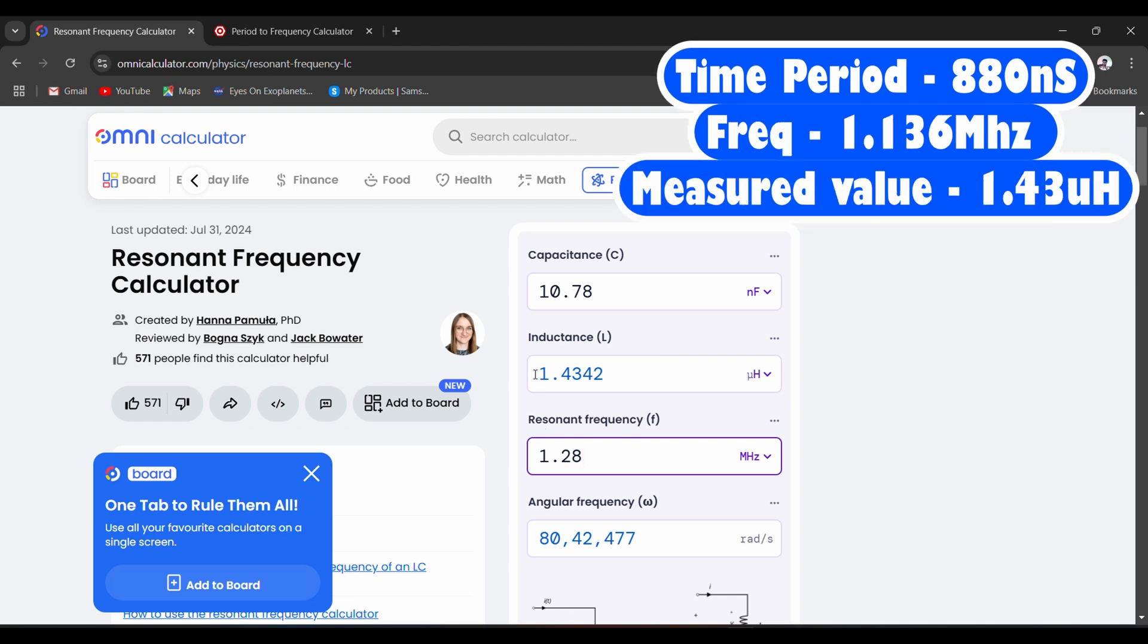Okay, so it gives us 1.43 microhenry. Now in order to know the value of that coil, we have some online calculators where you can input different values such as length, diameter and number of turns. It will give you the approximate inductance value. So let us do that and match with this.